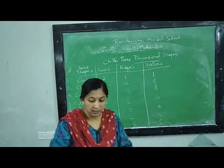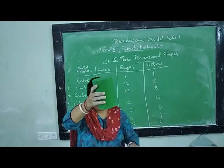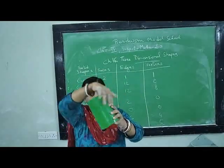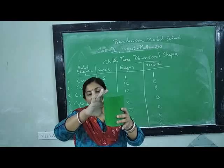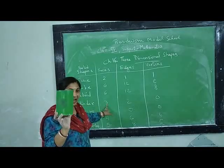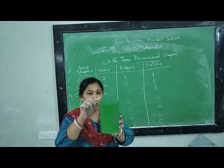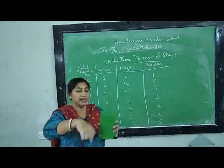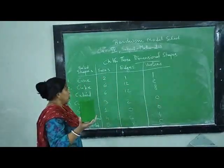Now comes the cylinder. In a cylinder it has three faces: two flat faces and one curved face. It has two edges — one at the top and one at the bottom. And since there is no corner in a cylinder, it has zero vertices.